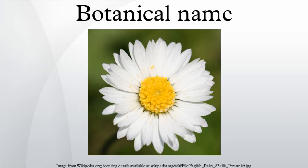An example in four parts is: Scilla hispanica var. campanulata 'Rose Queen' — a cultivar within a botanical variety. Apart from cultivars, the name of a plant can never have more than three parts. A botanical name in three parts — that is, an infraspecific name — needs a connecting term to indicate rank.